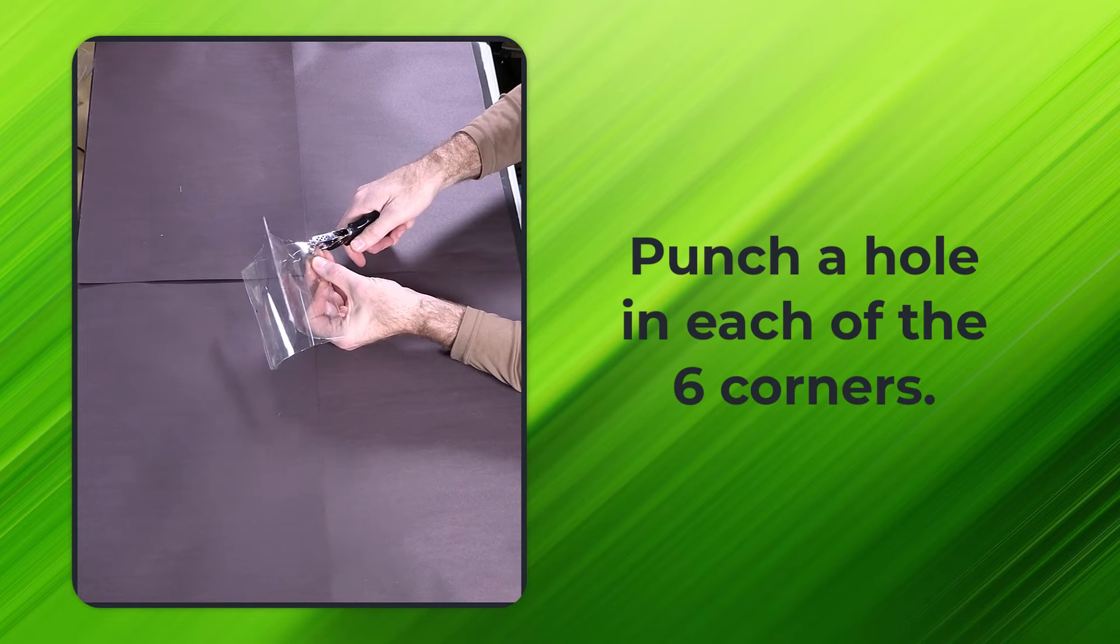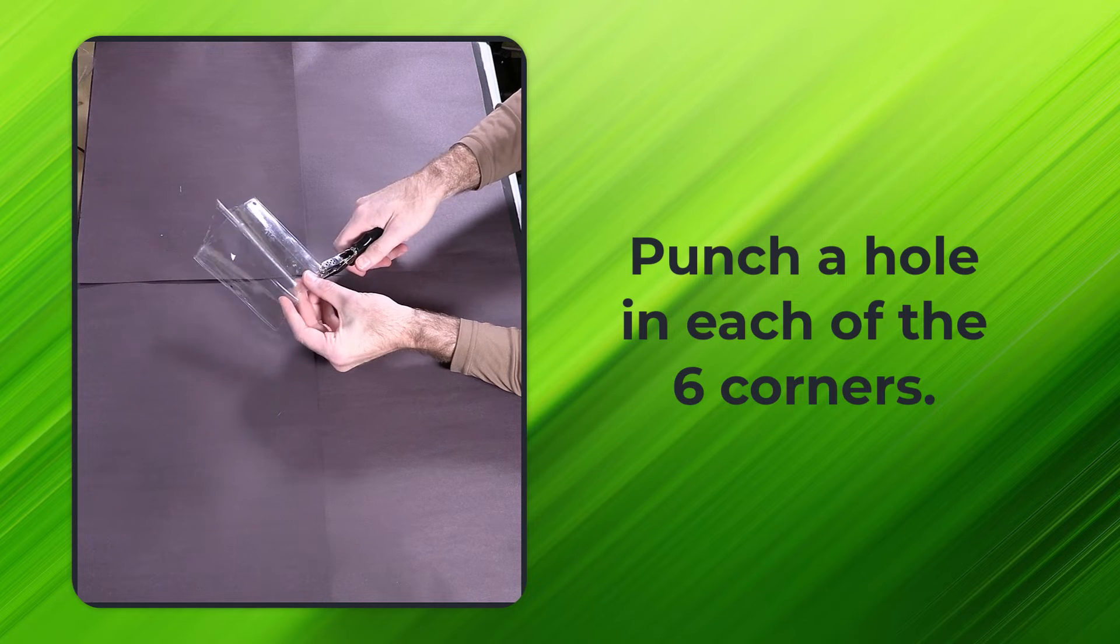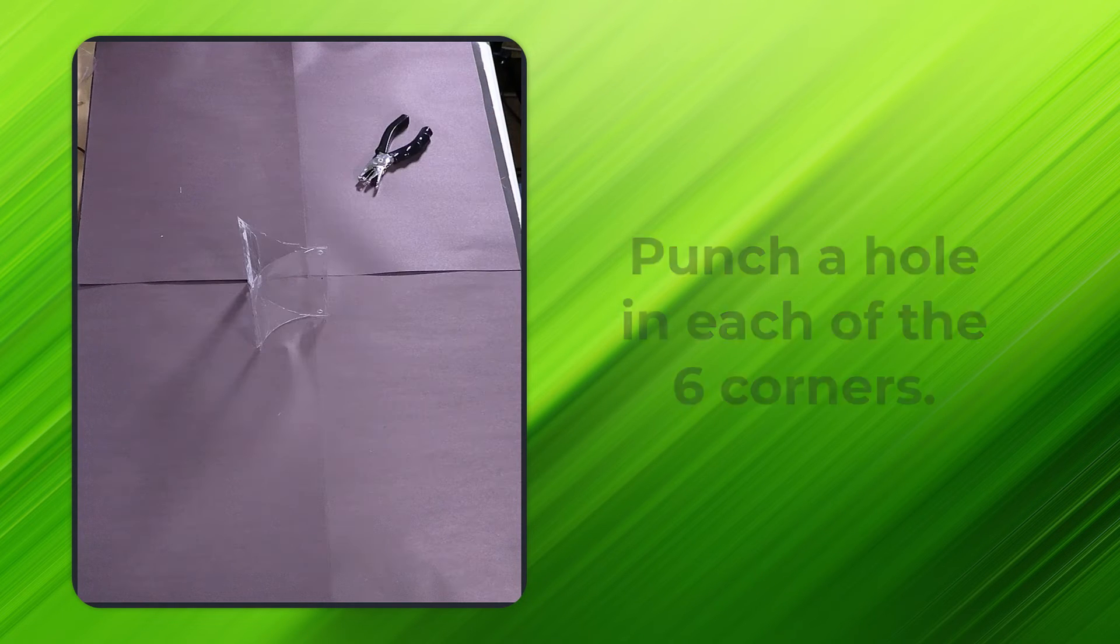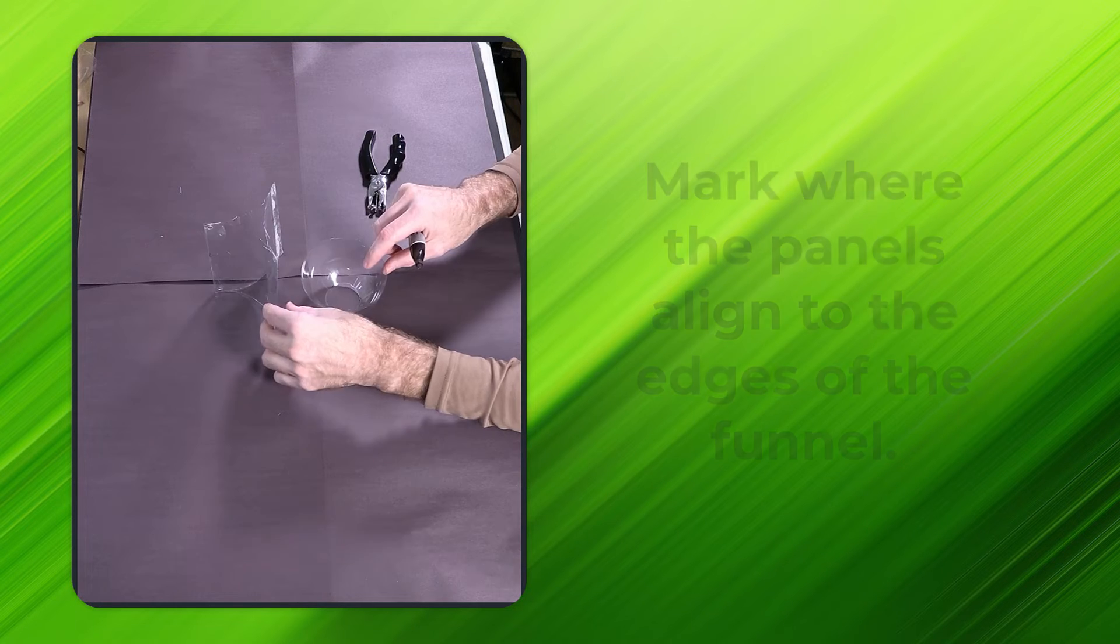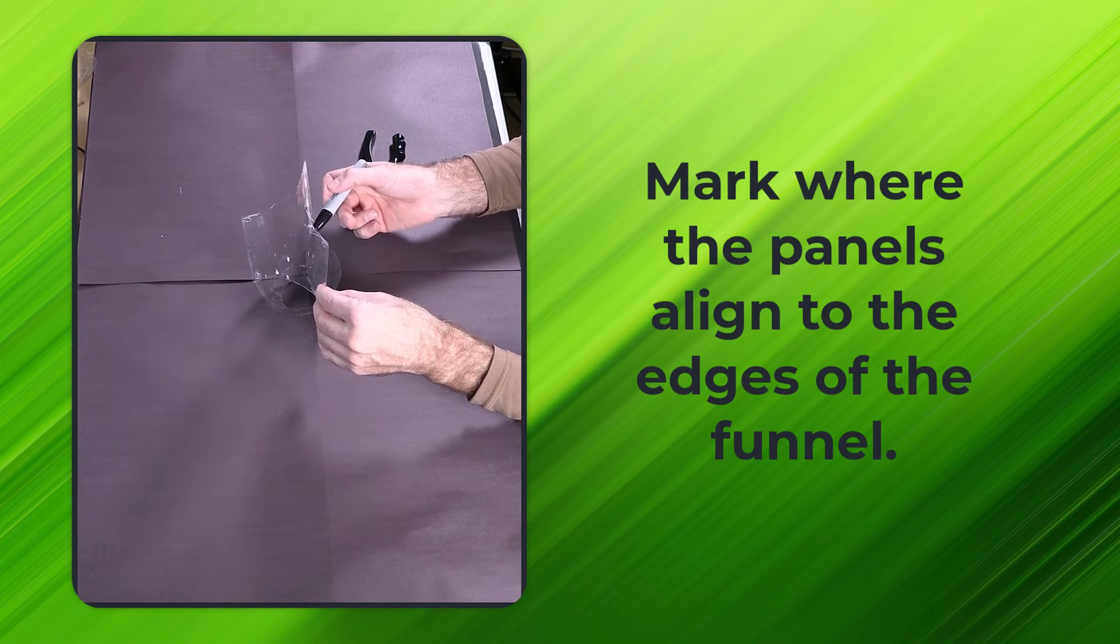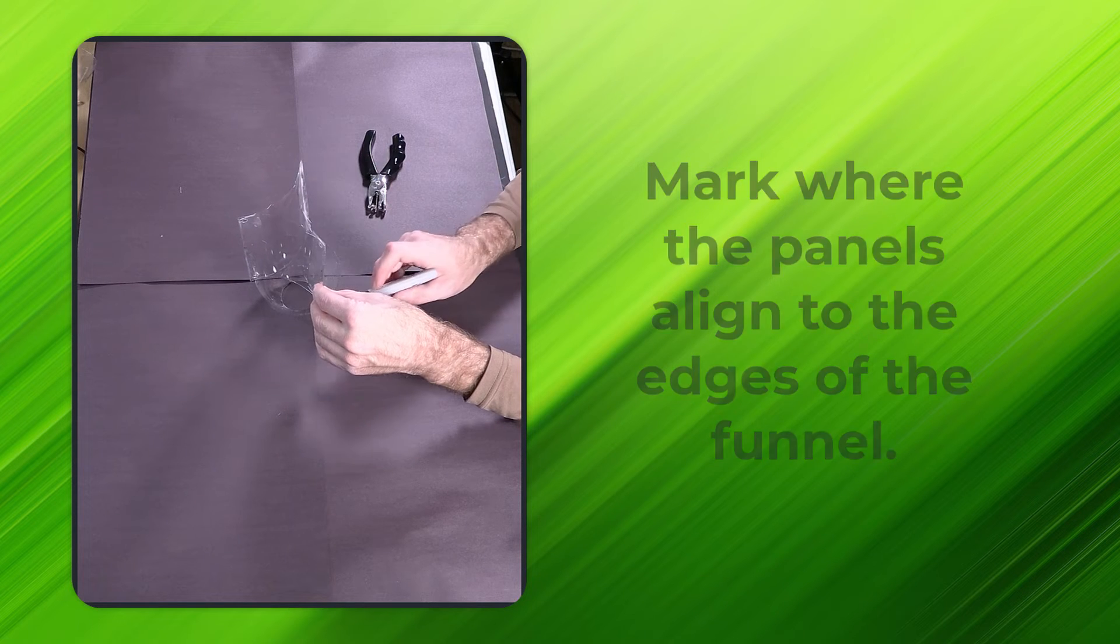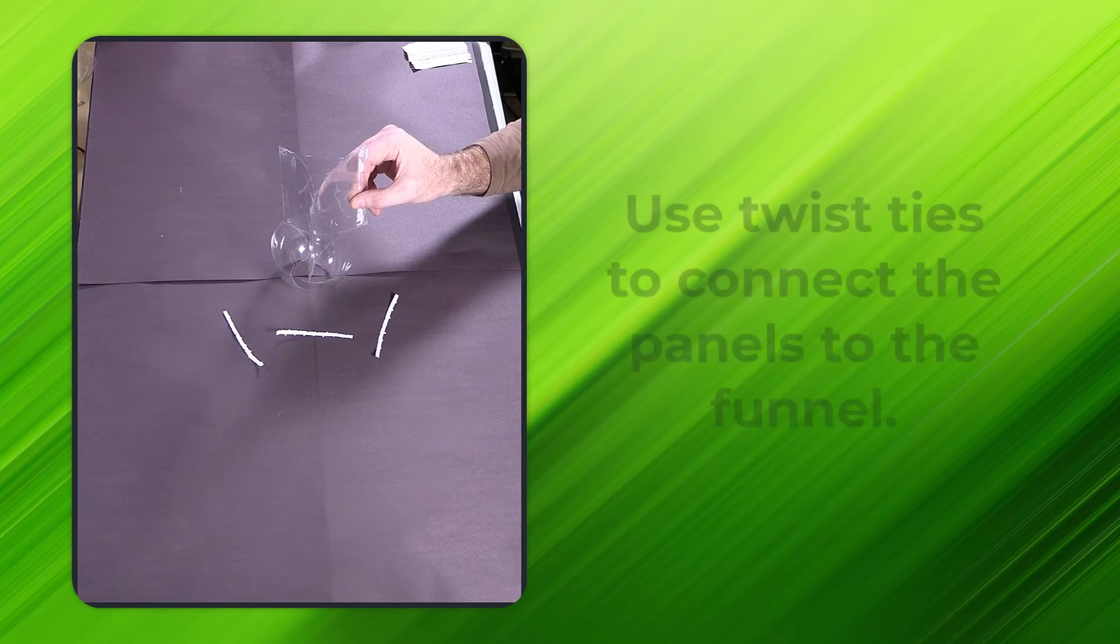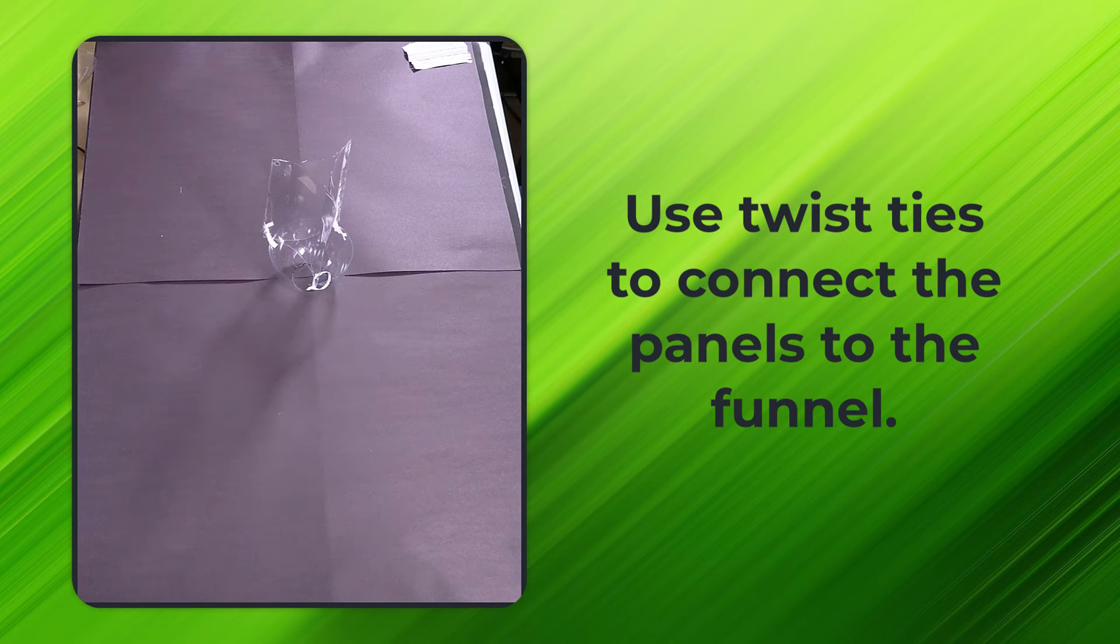Next, punch a hole in each of the six corners of your panel assembly. And now you're ready to put it all together. Mark where the panels align to the edges of your funnel. Then use your hole puncher to punch out matching holes on the side of the funnel. Use twist ties to connect the panels to the funnel.